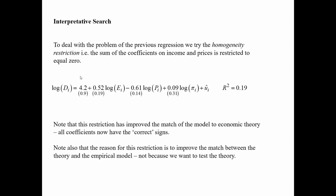Another type is interpretive search, where we try to fix the model — which had wrong signs on the elasticities — by imposing other restrictions. He tries the homogeneity restriction, where the sum of the coefficients on income and prices is restricted to equal zero. Imposing this restriction improves the match to theory in the sense that all coefficients now have the correct signs. The restriction is used here to improve the match between theory and the empirical model, not to test the theory.